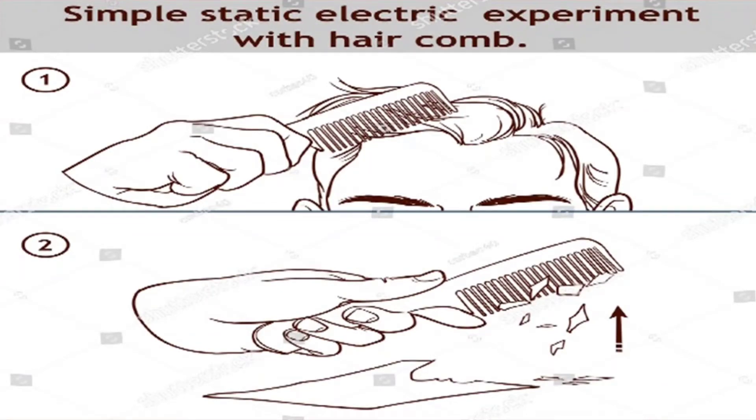Study the given figure and answer the question that follows. What happened to the bits of paper placed near the comb after using it? Why do you say so?